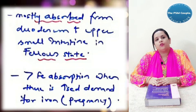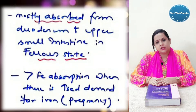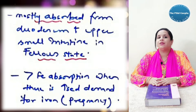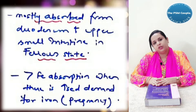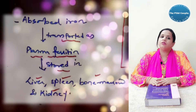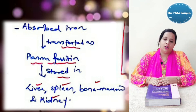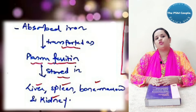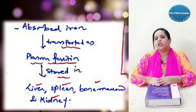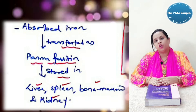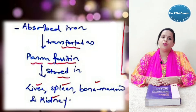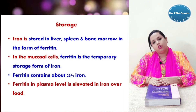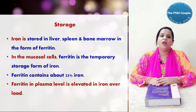Iron is mostly absorbed from the duodenum and upper small intestine in the ferrous state. More iron is absorbed when there is increased demand, especially during pregnancy. Absorbed iron is transported in the form of plasma ferritin and stored in the liver, spleen, bone marrow and kidney.